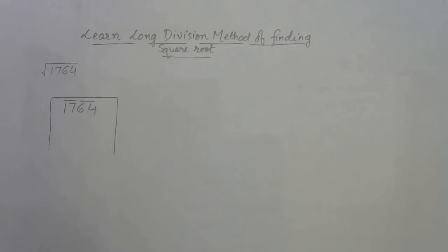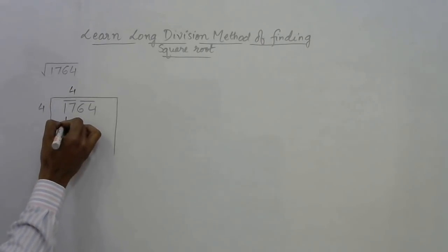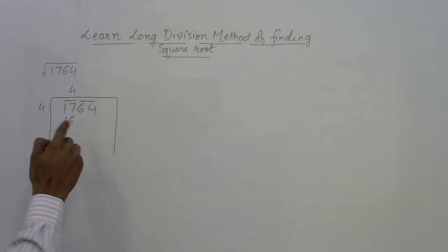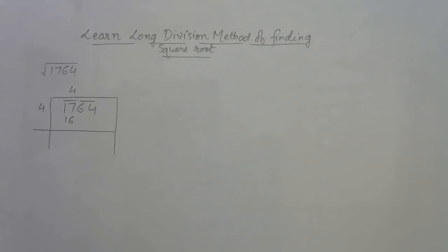For finding the square root of 1764 by long division, write it like division and make pairs from the right hand side: 64 is one pair and 17 is one pair. Now for the first pair 17, we need a number which when multiplied by itself gives just less than 17. 4 into 4 is 16, but 5 into 5 is 25 which is above 17.